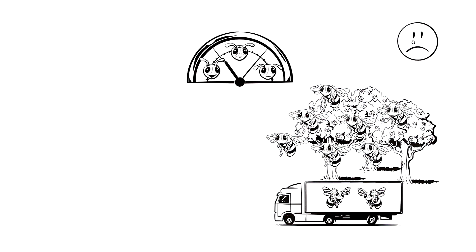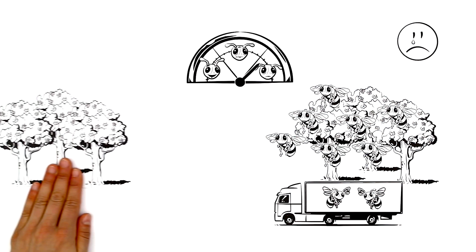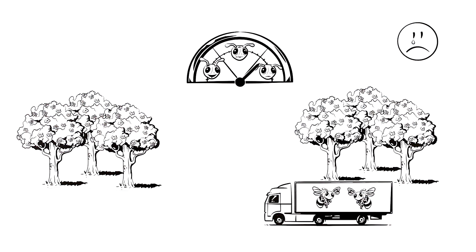When, in order to pollinate fields, they have to travel long distances and upon reaching their destination, again find only one kind of plant.